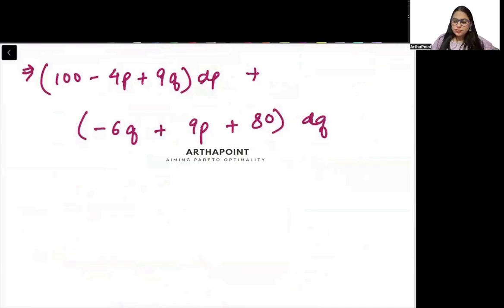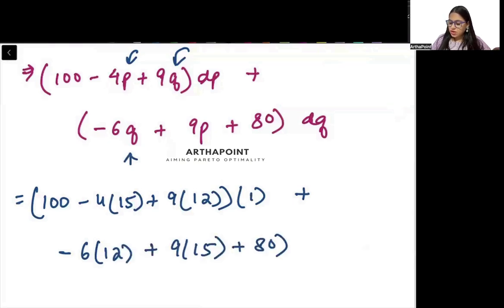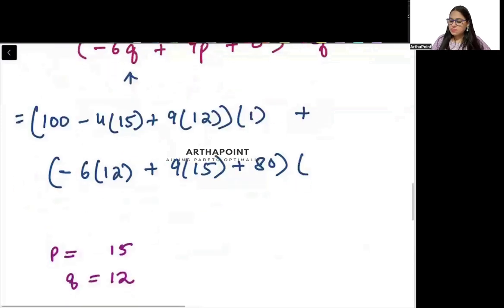Initially P was given as 15 and Q was given as 12. So this becomes (100 minus 4 into 15 plus 9 into 12), and dP is 1.5 since price is changing by 1.5, plus (minus 6 into 12 plus 9 into 15 plus 80), and dQ is also 1.5. So this is (100 minus 60 plus 108) into 1 plus (135 plus 80 minus 72) into 1.5.